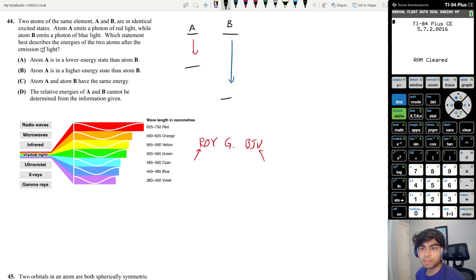Red is all the way at the start, so that has the least energy. So A is actually losing less energy than B. It's going to be answer choice B: atom A is in a higher energy state than atom B because they start off at the same energy, but A loses red light, which is less energy than blue light, so it ultimately ends up at a higher energy level.